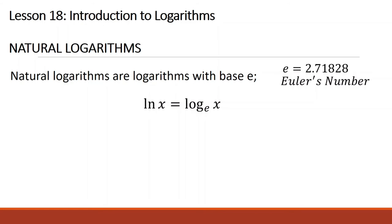The next type is natural logarithms. Natural logarithms are logarithms with base e, where e is Euler's number, which is approximately 2.71828. It is rewritten as ln of x. We read this as 'ln' or 'the natural logarithm.' Ln of x equals logarithm of x base e.